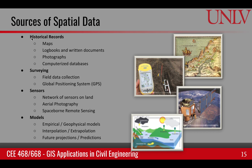These sources include historical records, surveying data, sensors, and models. The historical records include old maps, logbooks, written documents, photographs, and previous pre-GIS computerized databases. In case of surveying, the data can come from field surveys or actual GPS devices taken during the field surveys.